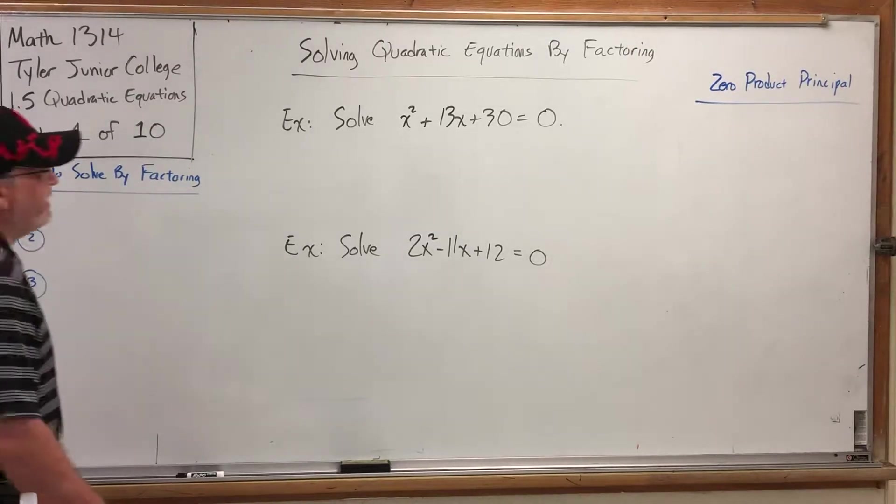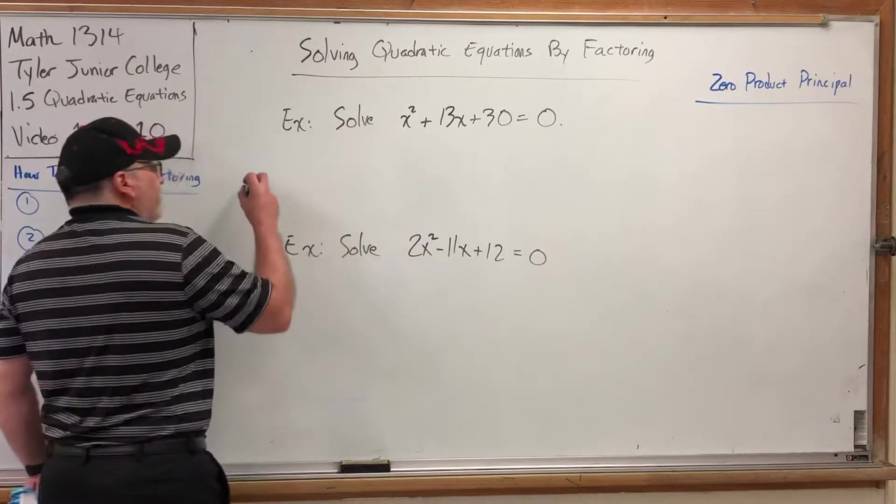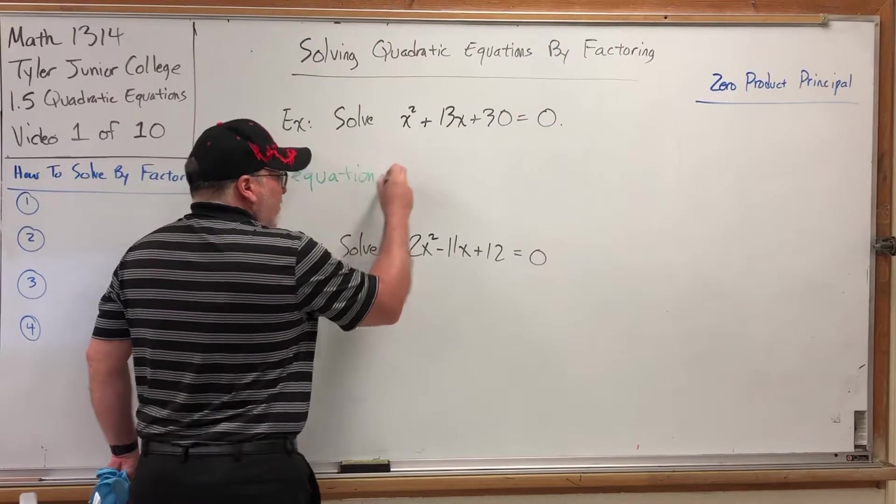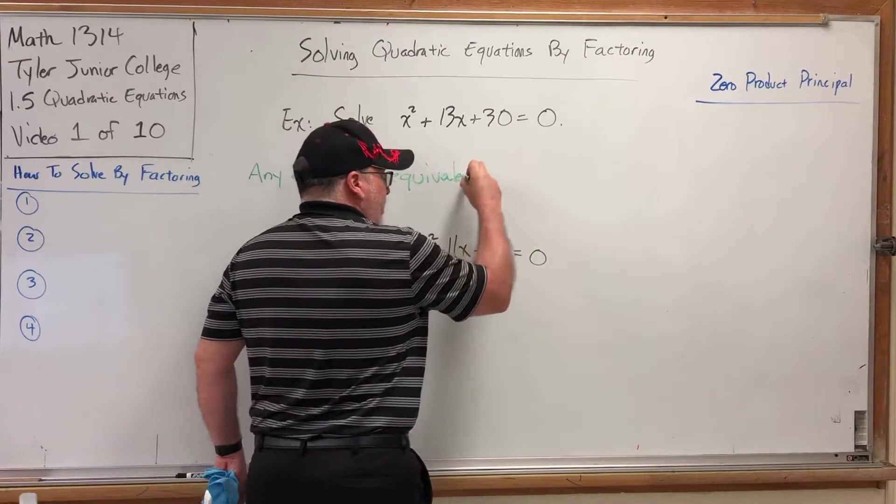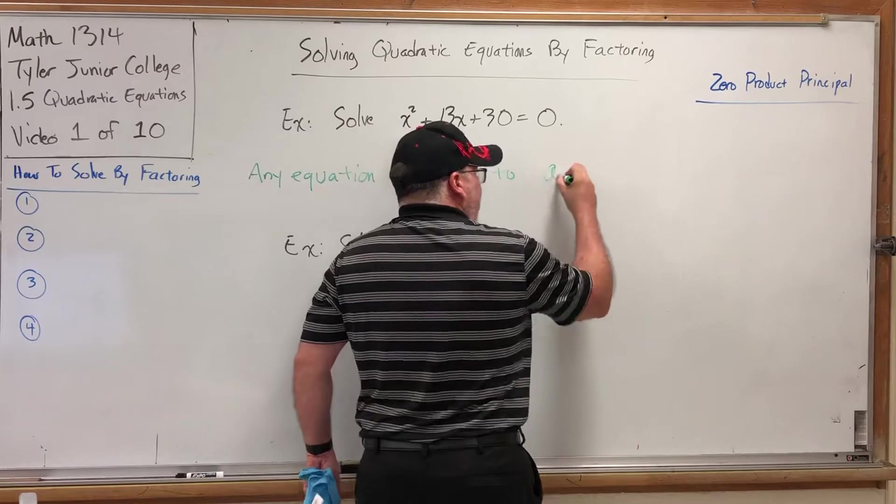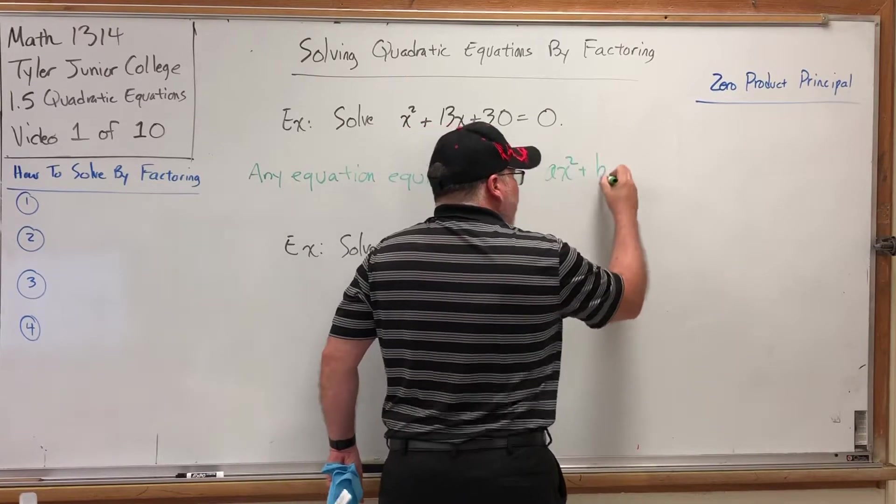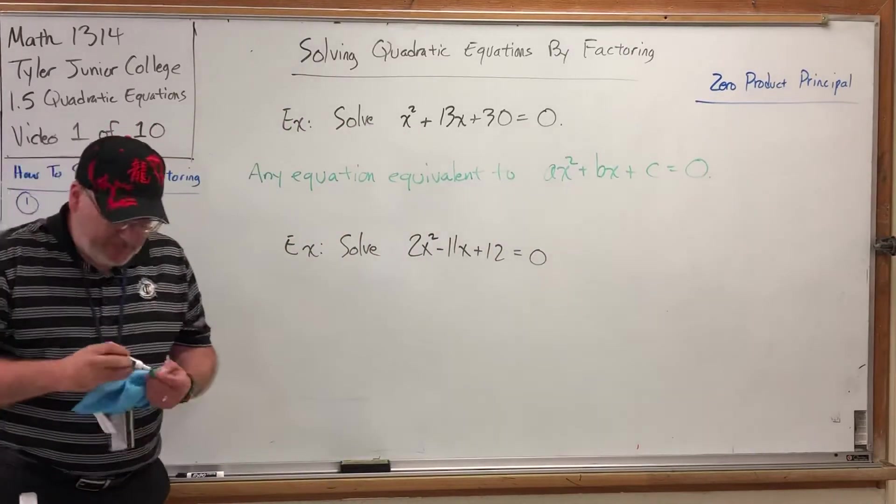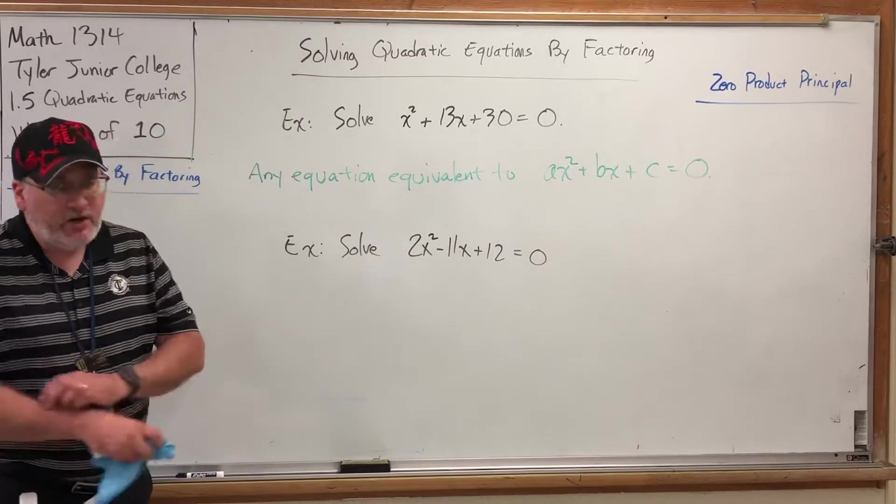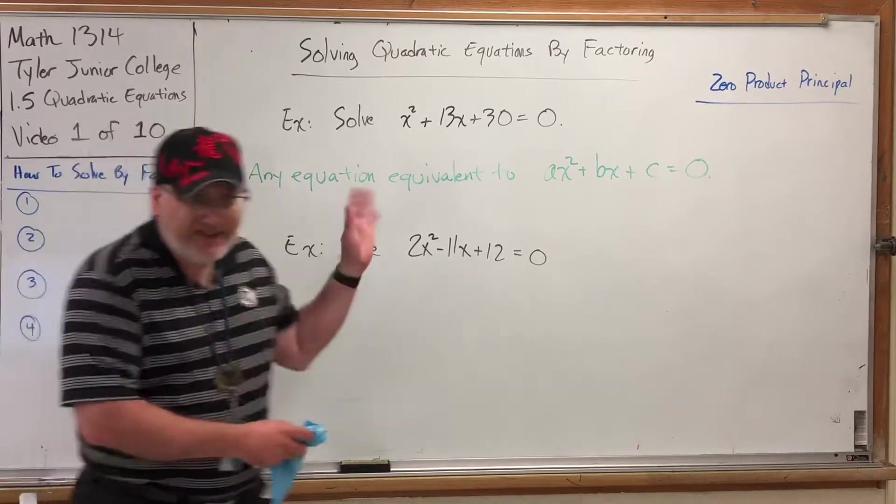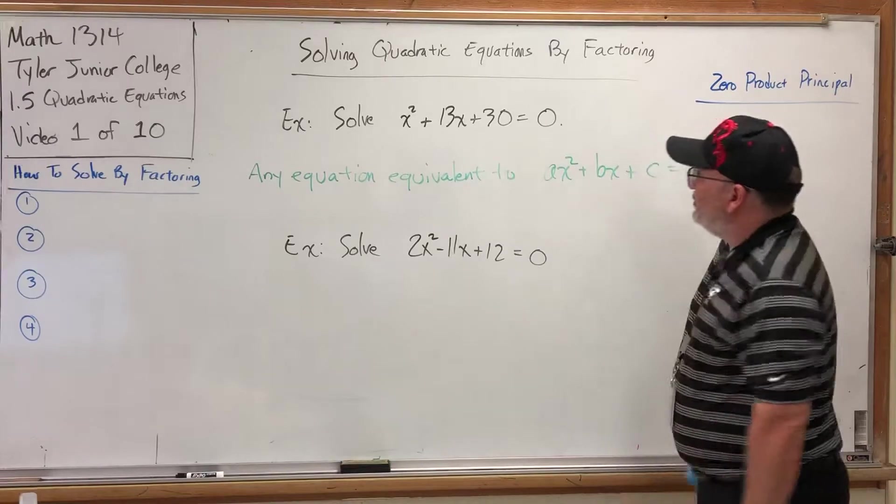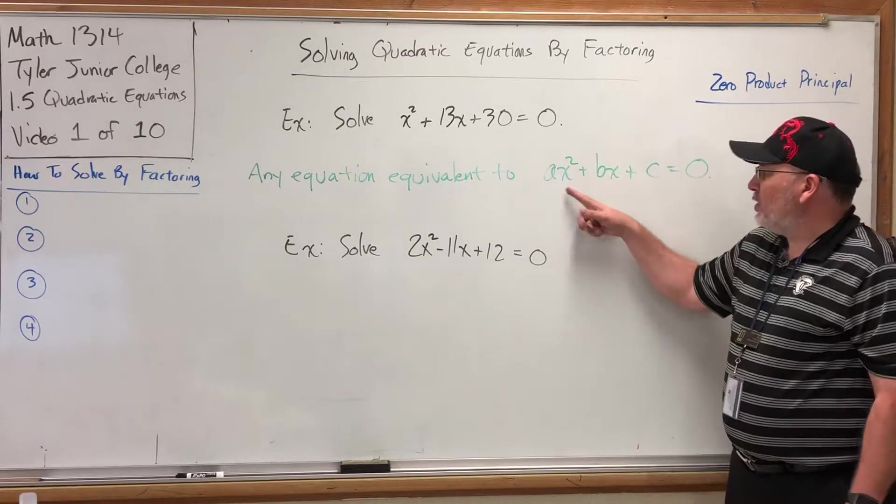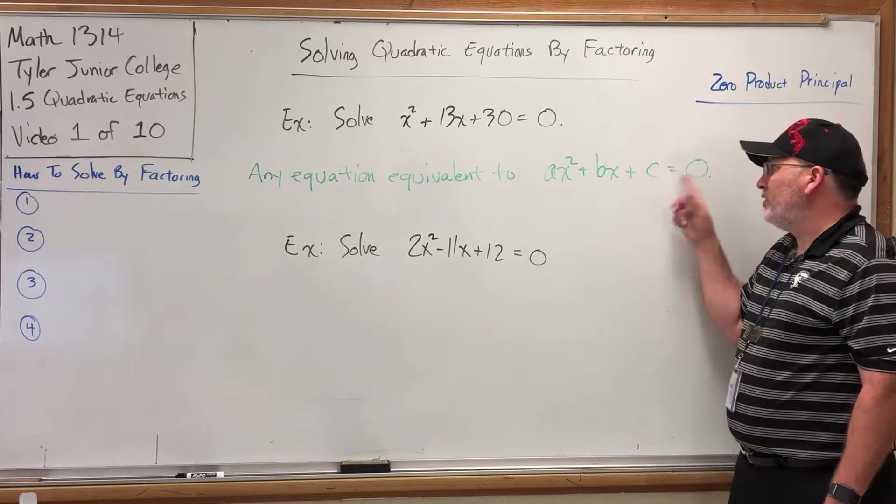So what is a quadratic equation? A quadratic equation is any equation equivalent to ax squared plus bx plus c is equal to 0. Now what I mean by equivalent is it may be in this form already, or with some algebraic manipulation we can make it look like this form. You'll notice that the two examples on the board already are of this form.